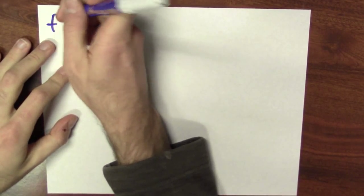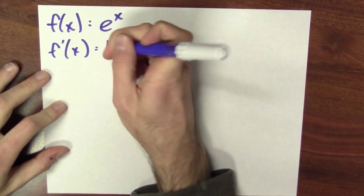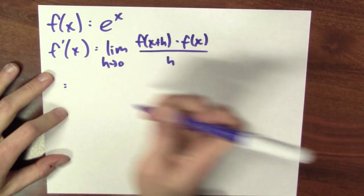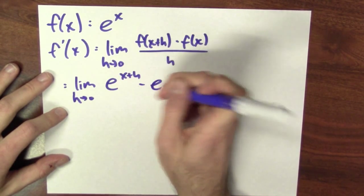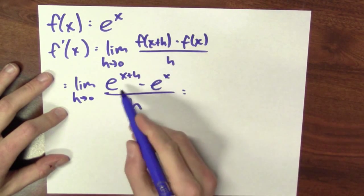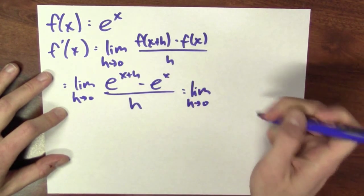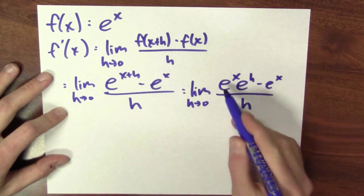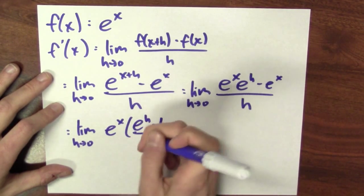Now let's consider the function f of x equals e to the x. What's the derivative of this function? From the definition, that's the limit as h approaches 0 of f of x plus h minus f of x over h. In this case f is just e to the x, so this is the limit as h approaches 0 of e to the x plus h minus e to the x over h. And since e to the x plus h equals e to the x times e to the h, this is the limit as h goes to 0 of e to the x times e to the h minus e to the x over h. I've got a common factor of e to the x, so I'll pull out that common factor, giving the limit as h approaches 0 of e to the x times e to the h minus 1 over h.